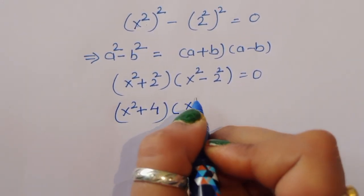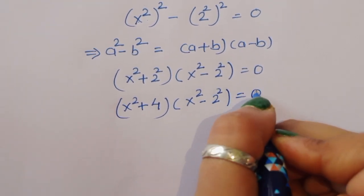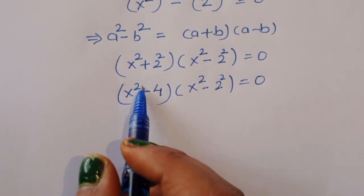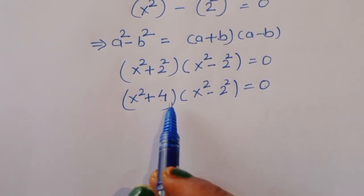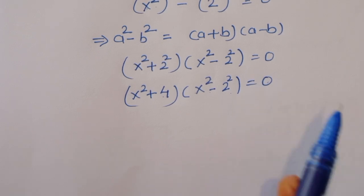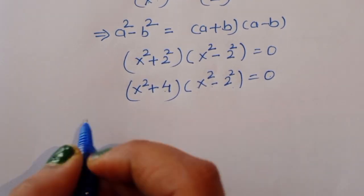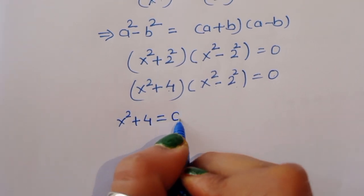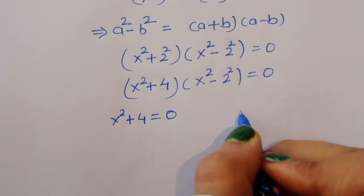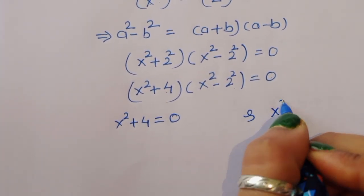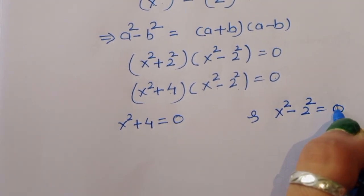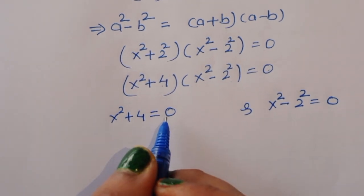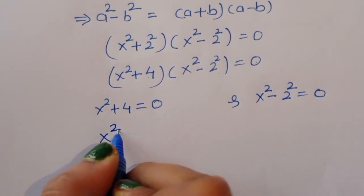Now we have two equations: the first one is x² + 4 = 0, and the next one is x² - 4 = 0. Taking the first equation: x² + 4 = 0.